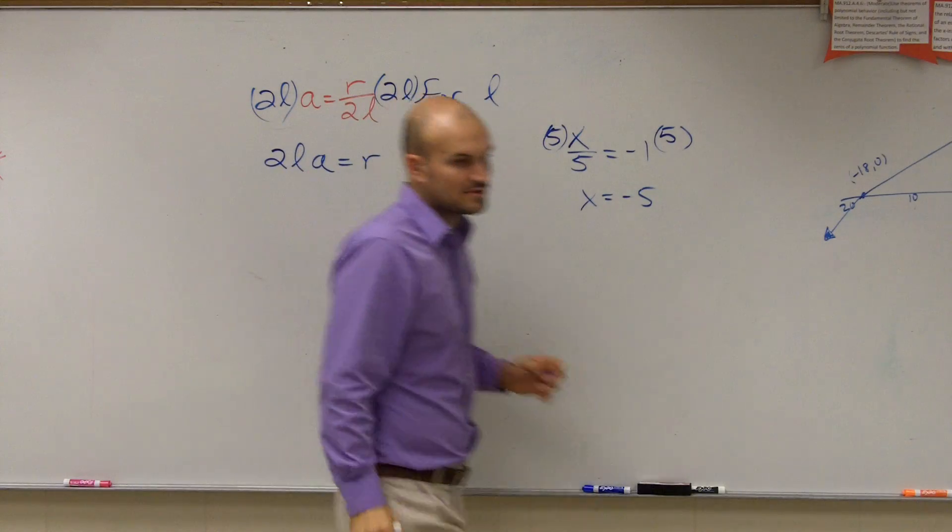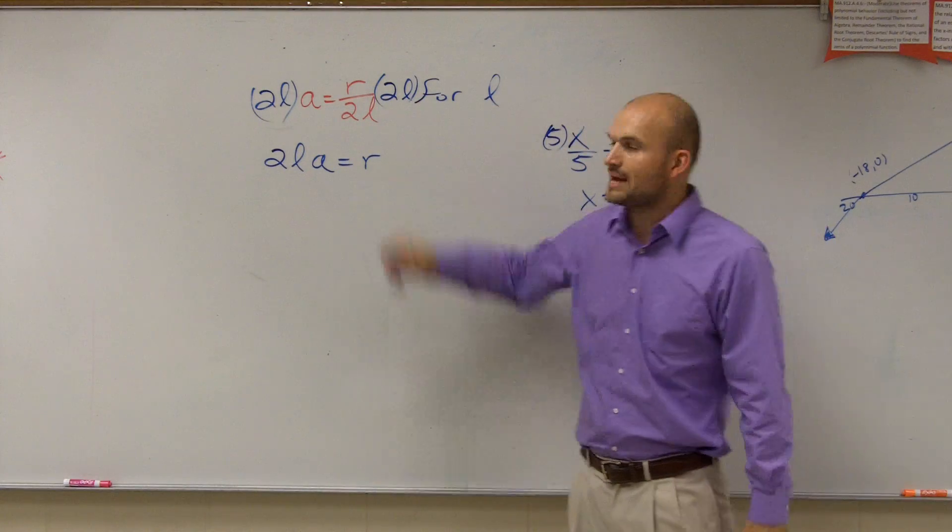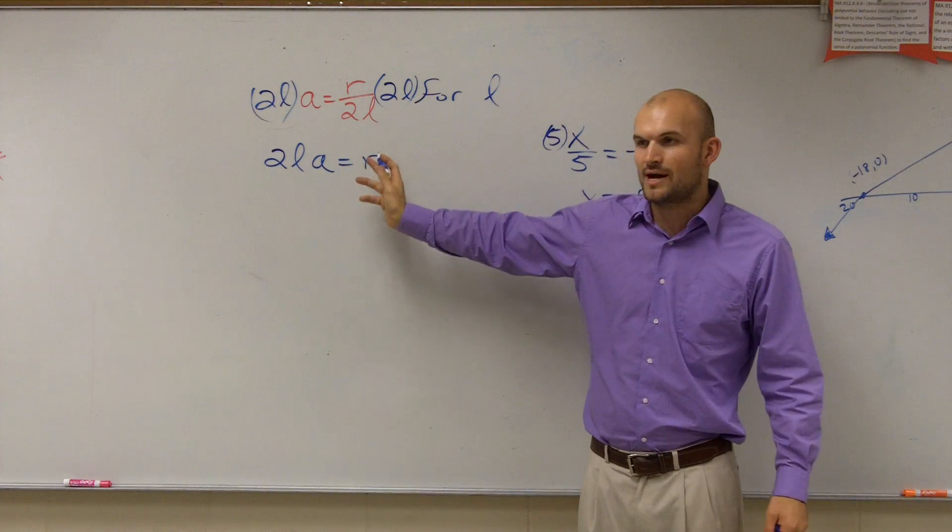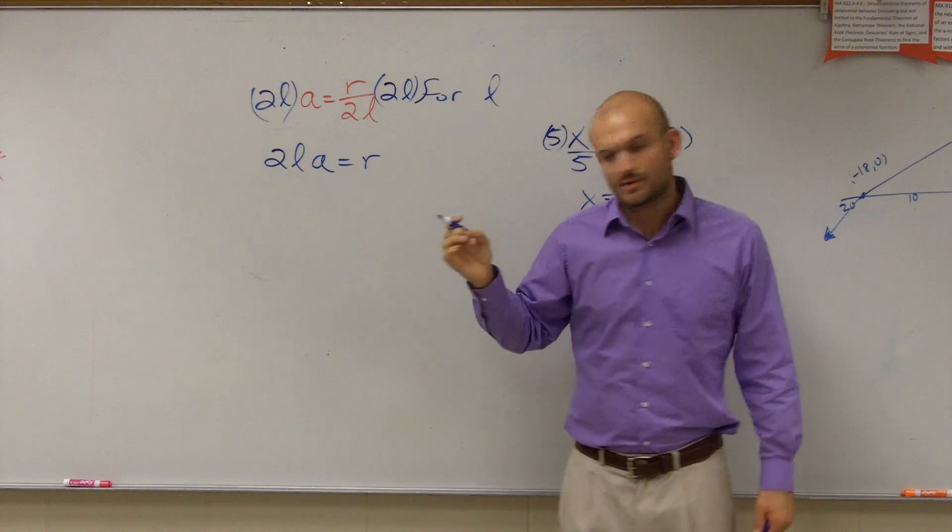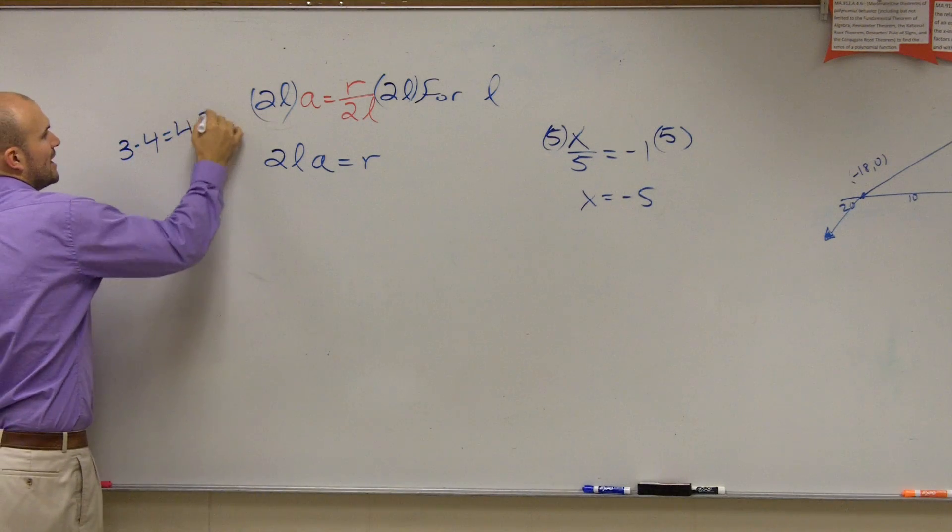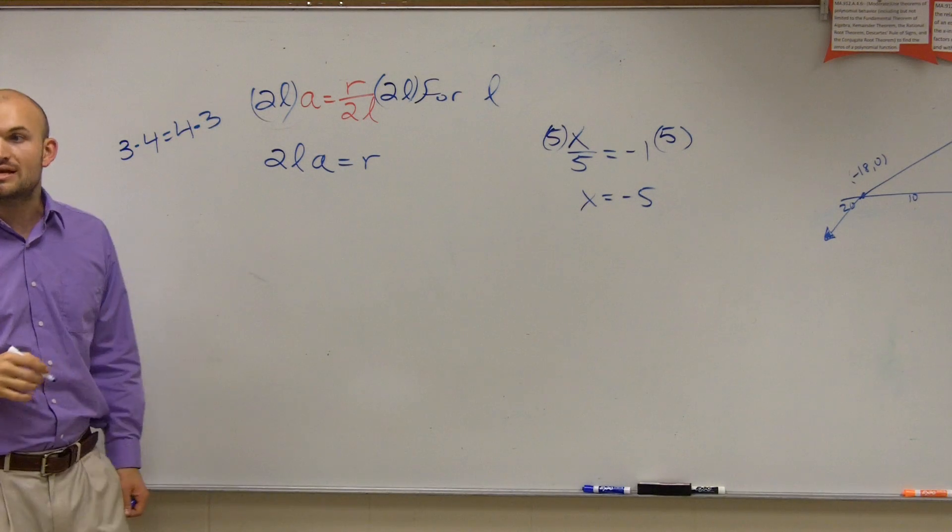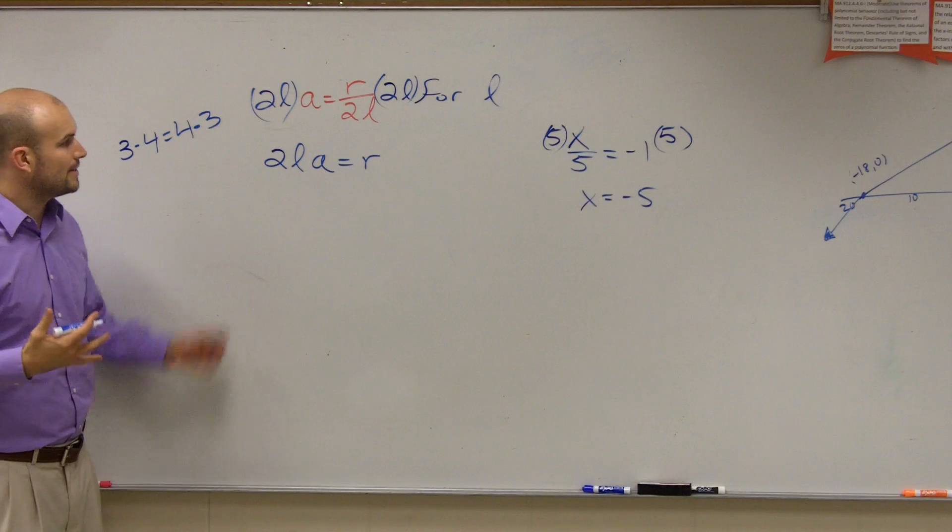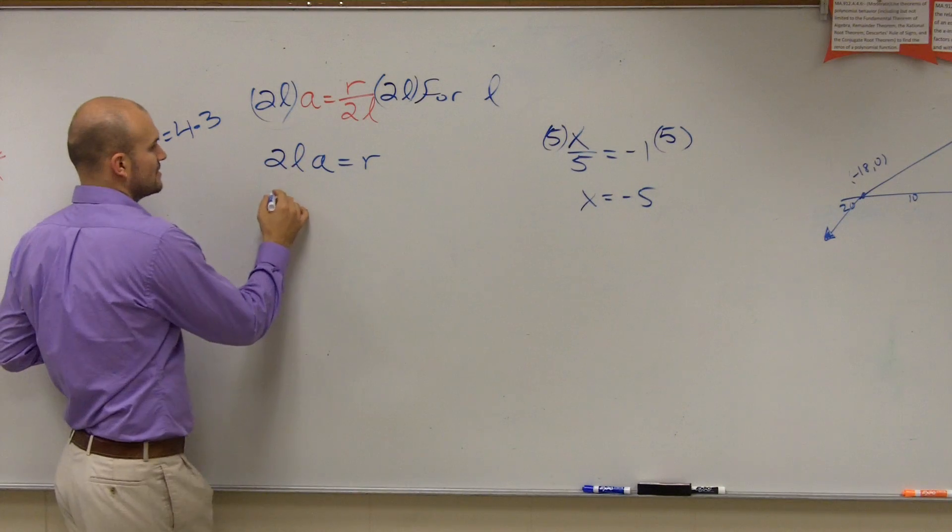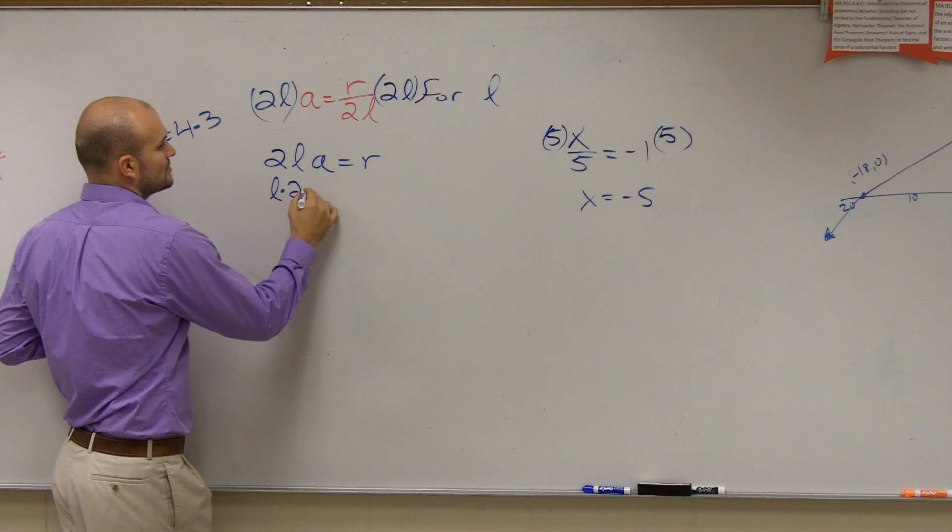Now, this gets a lot of students very confused because they say, well, now what's happening to my L? It's kind of being divided, or it's being multiplied. Well, let's make this a little bit simpler. You guys, by the commutative property of multiplication, know that 3 times 4 is equal to 4 times 3, correct?